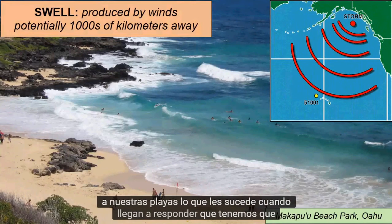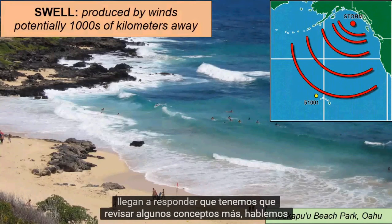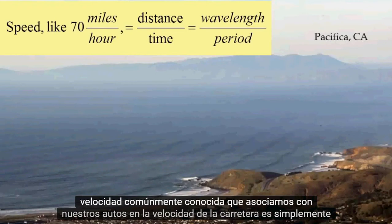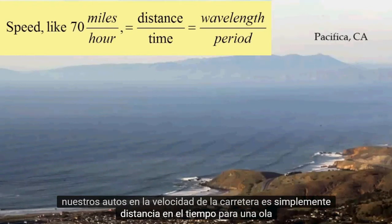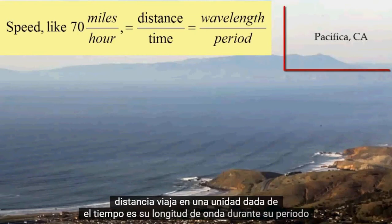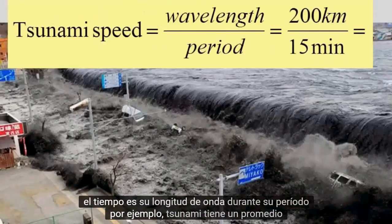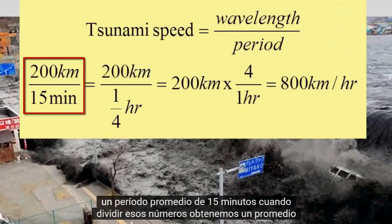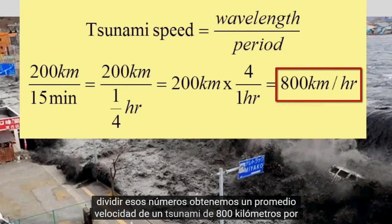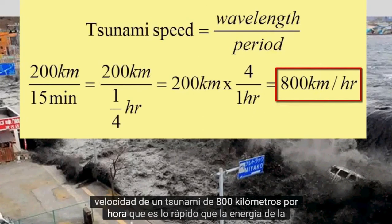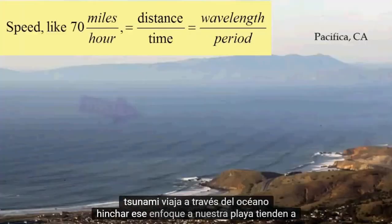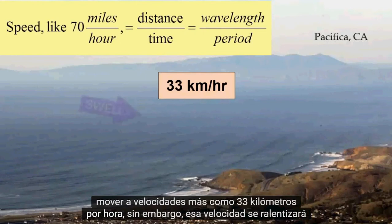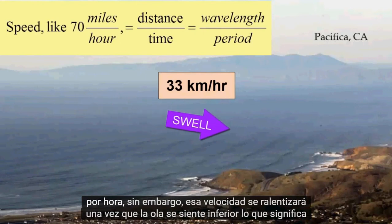What happens to them when they arrive? To answer that, we have to review a few more concepts. Let's talk first about wave speed. Like the more commonly known speed we associate with our cars on the highway, speed is simply distance over time. For a wave, the distance it travels in a given unit of time is its wavelength over its period. For example, tsunami have an average wavelength of 200 kilometers and an average period of 15 minutes. When we divide those numbers, we get an average speed of a tsunami of 800 kilometers per hour. Swells that approach our beach tend to move at speeds more like 33 kilometers per hour.